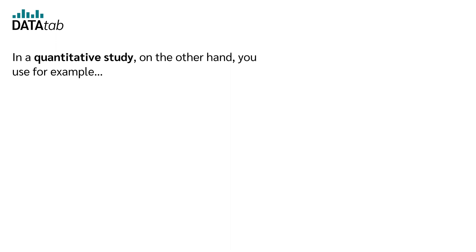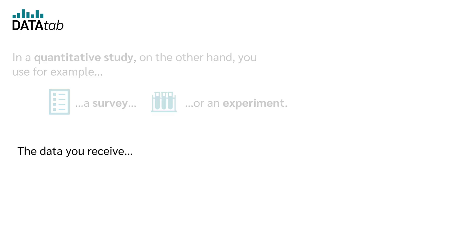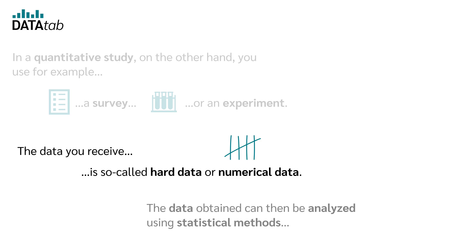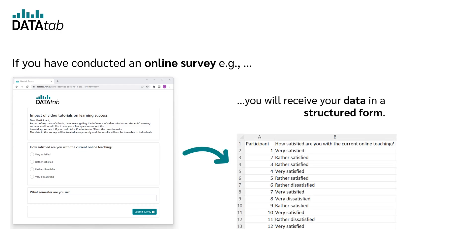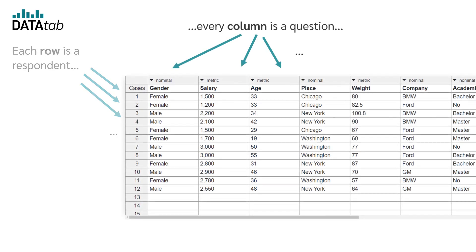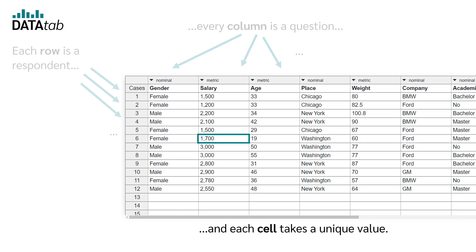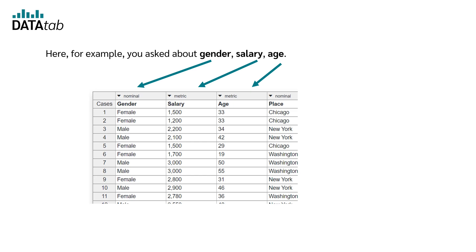In a quantitative study, you use, for example, a survey or an experiment. The data you receive is so-called hard data, or numerical data, which can then be analyzed using statistical methods according to clear rules. If you have conducted an online survey, you will receive your data in a structured form: each row is a respondent, every column is a question, and each cell takes a unique value. For example, you might ask about gender, salary, and age — the first person could be female with an income of 1,500 euros.